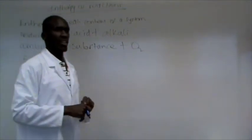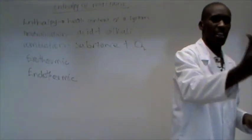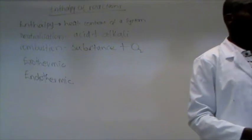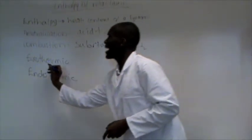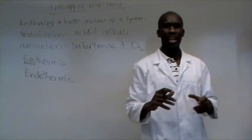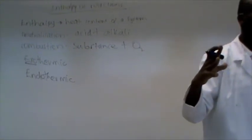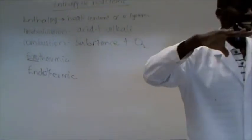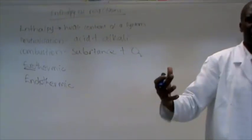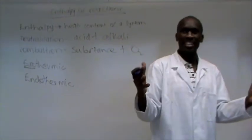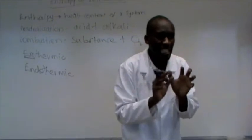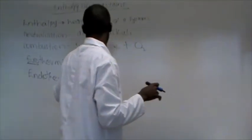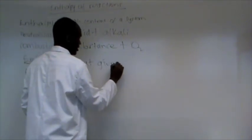Exothermic. What's the meaning of the term exothermic? Heat being given out. What's the meaning of the word exo? Exo outside. You've heard of an exoskeleton with insects? Something outside. So heat being given out is called exothermic. A chemical reaction in which heat is given out.